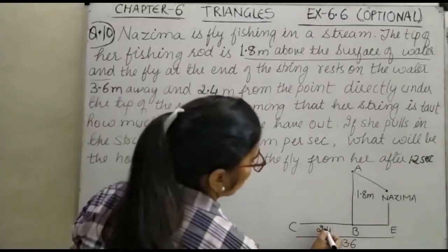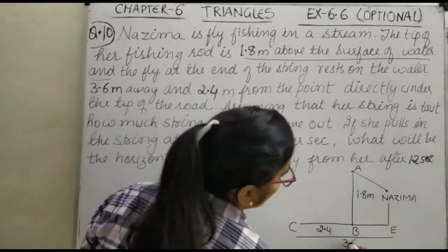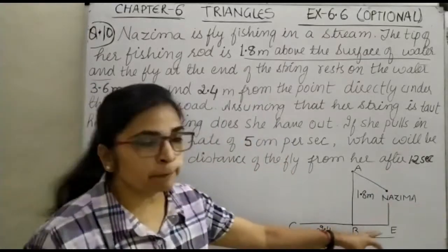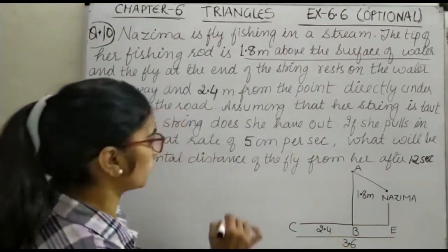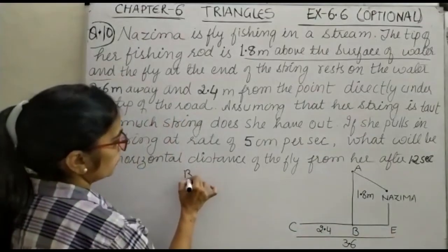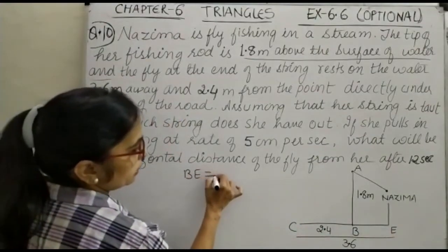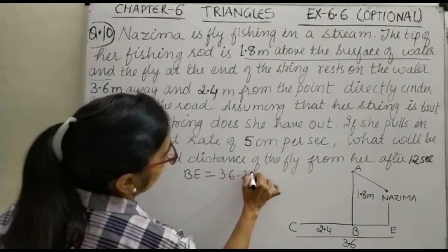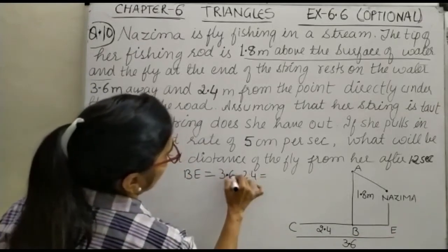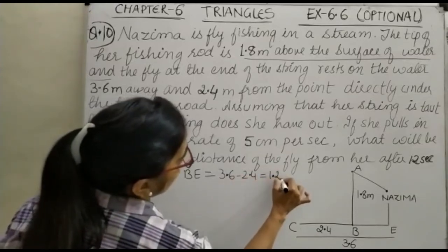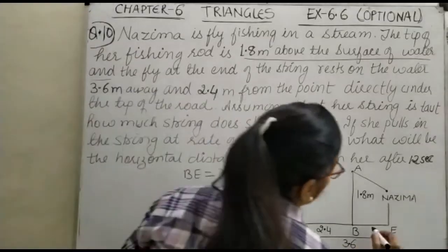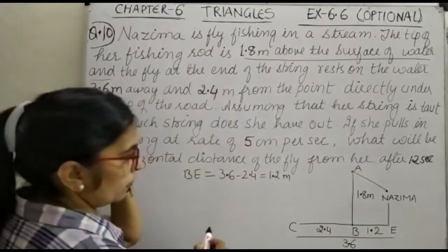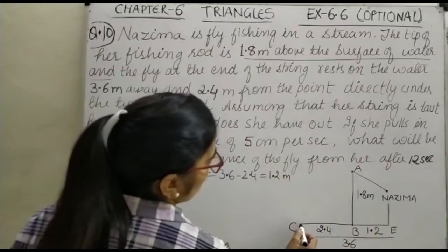Now, this point as C. This distance is given 3.6. You can see here, you have got 2.4. This is your 3.6 and this is your 1.8. So what will be BE? BE will be equal to 3.6 minus 2.4, so that is 1.2 meter. So you have checked that this is the position of fly.